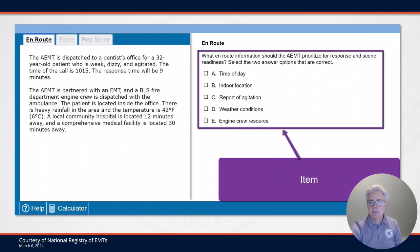This screen is just showing you the item associated with the en route phase. Again, the purple lines, arrows, and boxes will not be seen by the candidate. The candidate will only see the information that is black and white and blue.